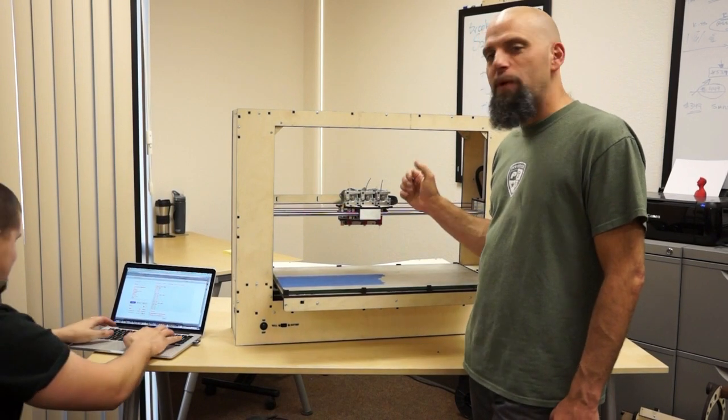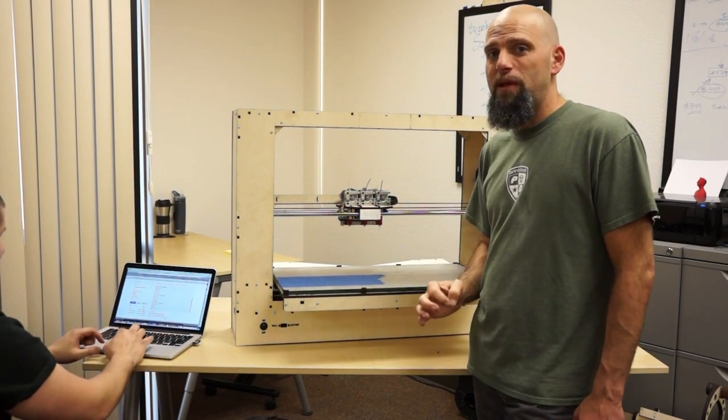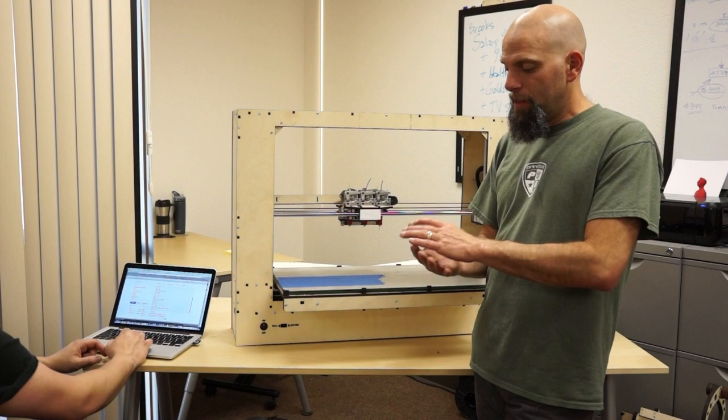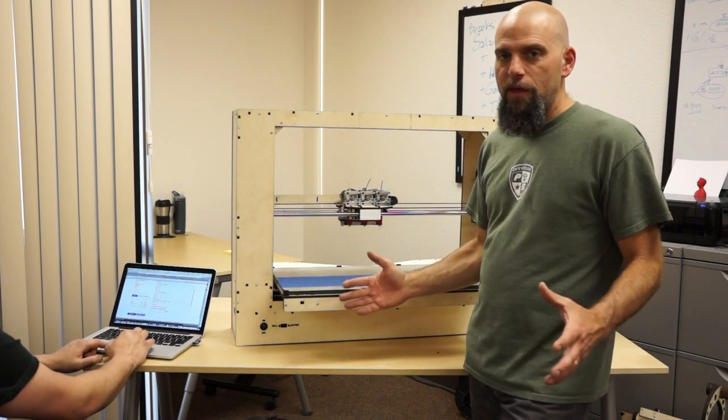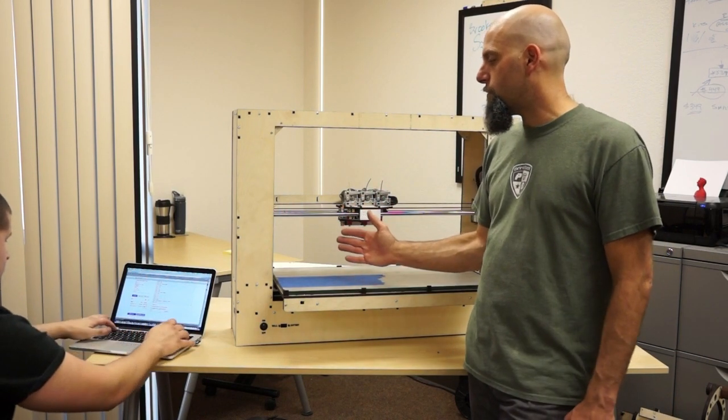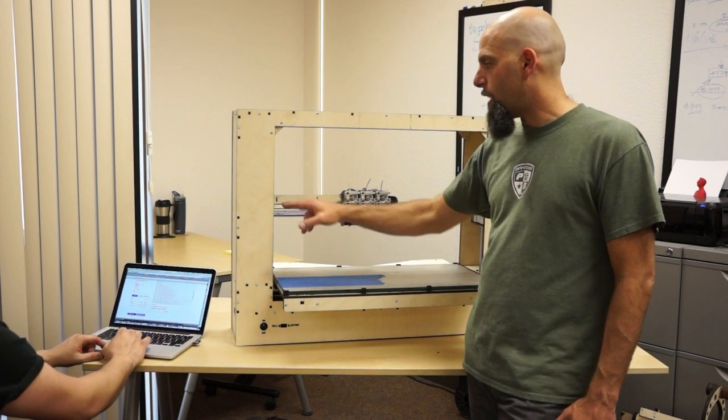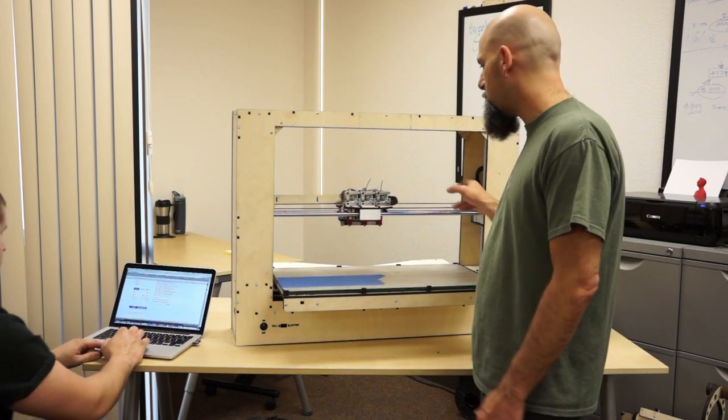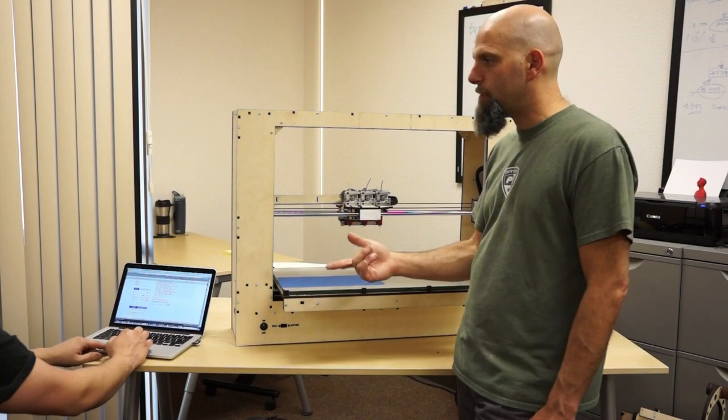But before we get to printing, we have to calibrate a little bit. So let me just give you a grand overview of the things at play here. First thing I want to do is make sure that this side and this side are totally level. That might be fun to do first.